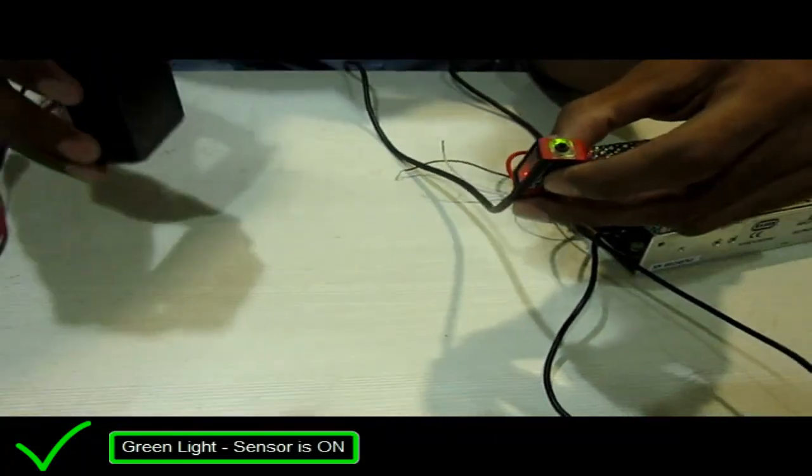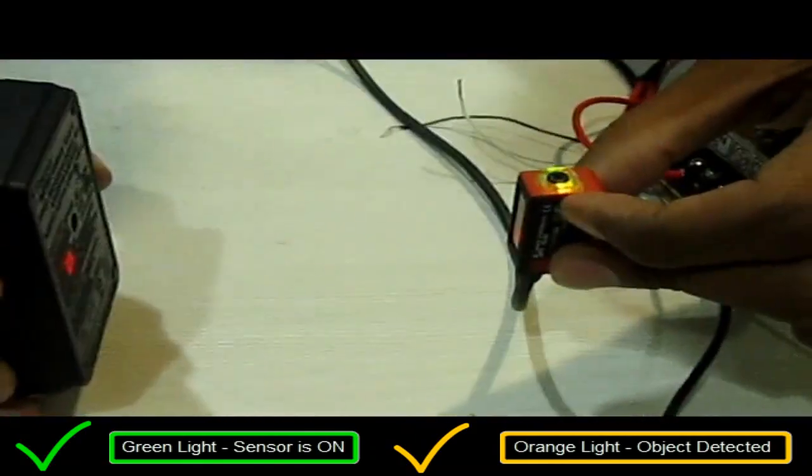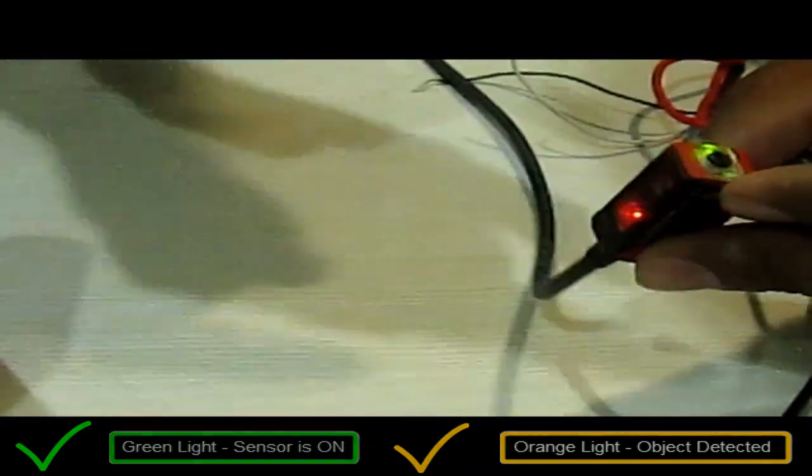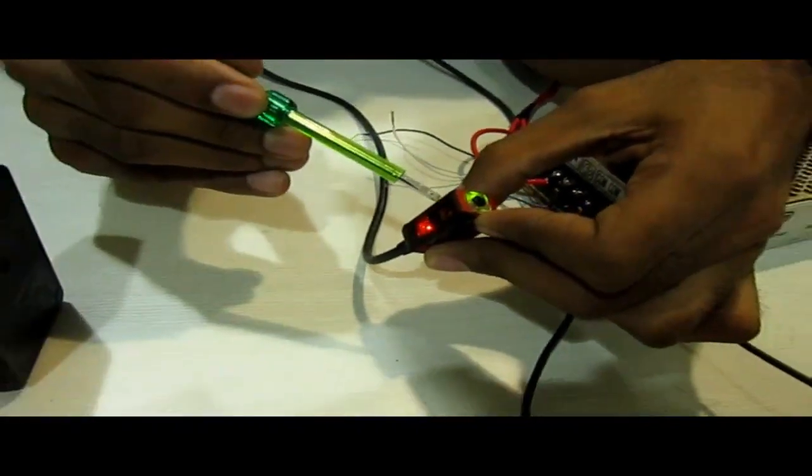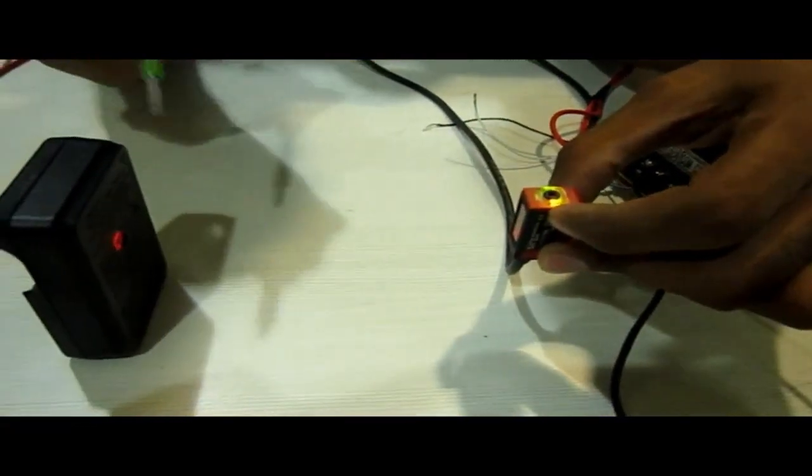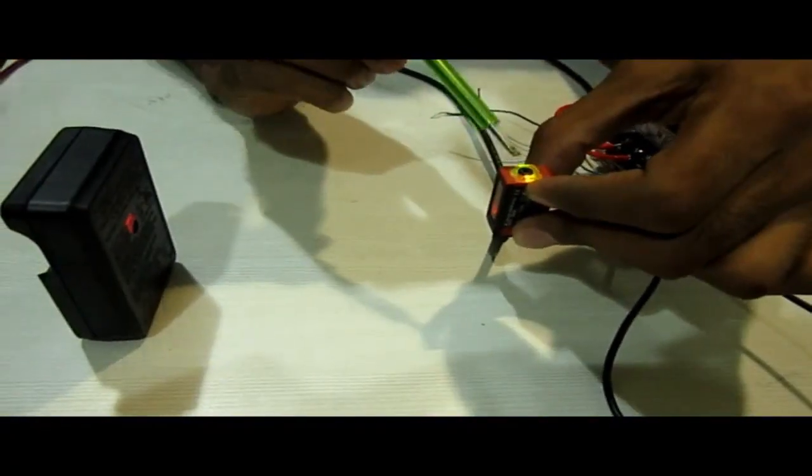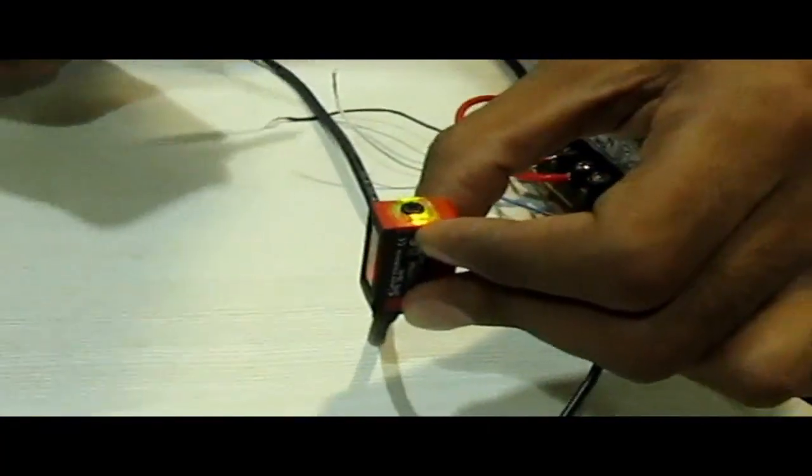When I put some object in front of the sensor you will see an orange LED is on. This indicates the presence of object. The principle behind this is we have an emitter and a receiver. This emitter is emitting a light at certain frequency and this light when gets on the object it reflects back to the receiver. When the receiver receives the same light of the same polarity it detects the object and gives an indication. This indication is given by orange light and is also coming on these wires.